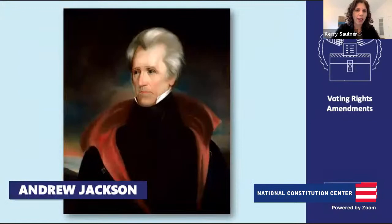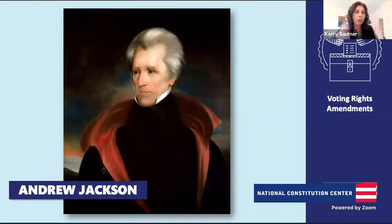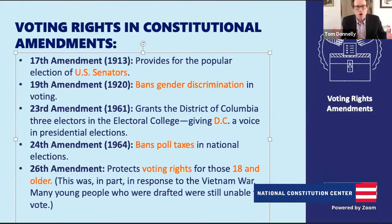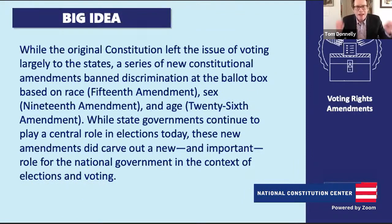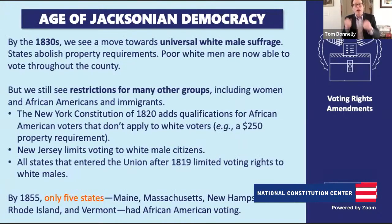Kari: All the New Jersey people are shouting out right now! You see the right to vote ebbing and flowing—not just where in the country, but across the country over time. One of the first expansions of who gets to vote starts with Andrew Jackson. Tom Donnelly: Moving into the 1820s and 1830s—the age of Jackson—we're seeing massive changes. One of the big changes is moving towards universal white male suffrage. States are moving to abolish property requirements; poor white men are now able to vote.